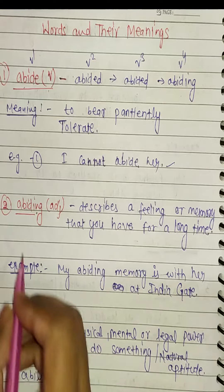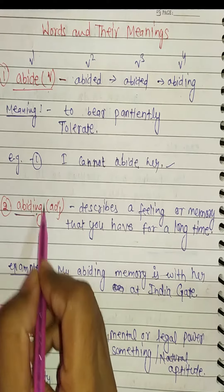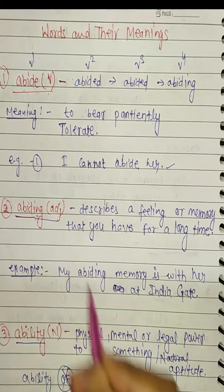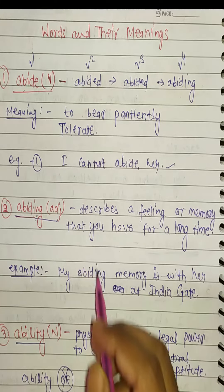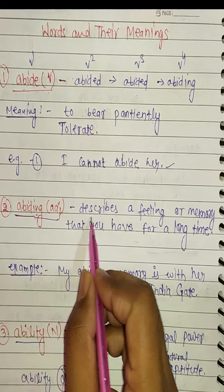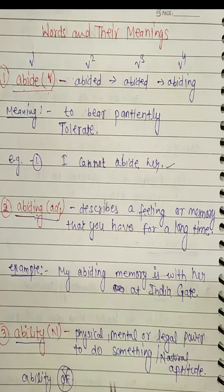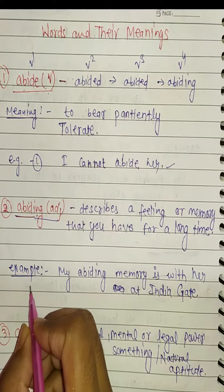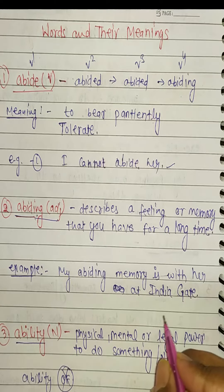The second word is 'abiding'. When we use it as an adjective, the meaning changes. It describes a feeling or memory that you have for a long time. Example: My abiding memory is with her at India Gate.